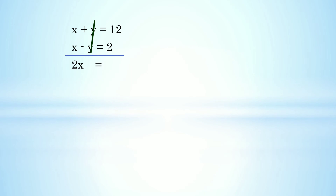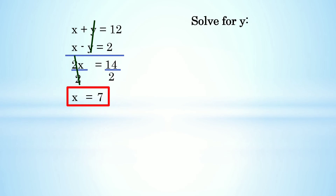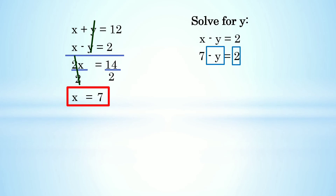Using elimination method, pwede na nating eliminate si y dito kasi isa siyang positive at isa siyang negative — automatic equals na siya sa 0. Cancel na natin siya. Add the remaining: x + x = 2x, and 12 + 2 = 14. Divide both sides by 2: x = 14 ÷ 2 = 7. Then to find the value of y, gamitin natin ang x - y = 2. Palitan si x ng 7: 7 - 2 = y.